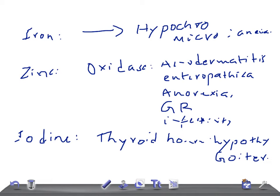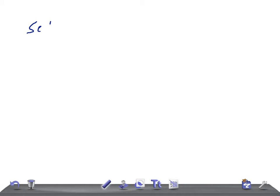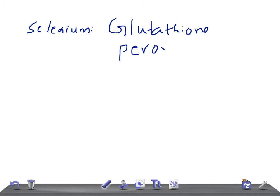Now let's talk about another important trace metal: selenium. Selenium is a component of glutathione peroxidase. Selenium, like vitamin E, protects against oxidative damage of membrane lipids.